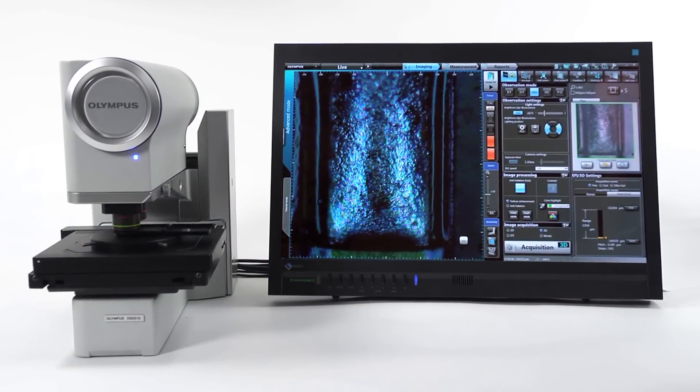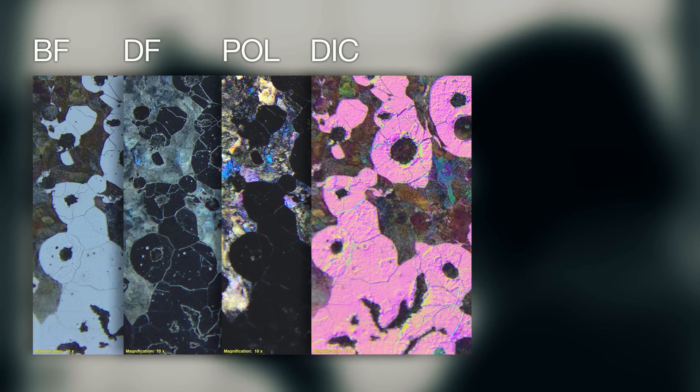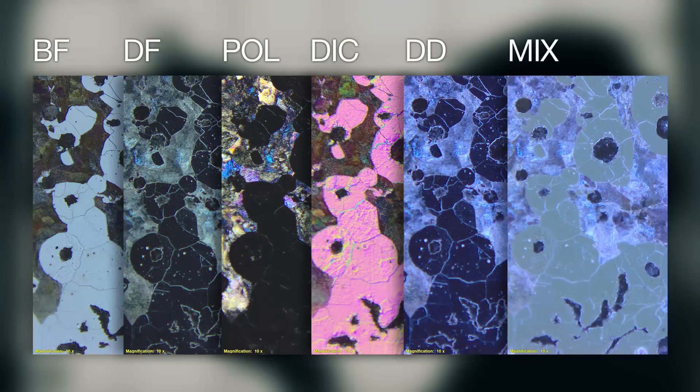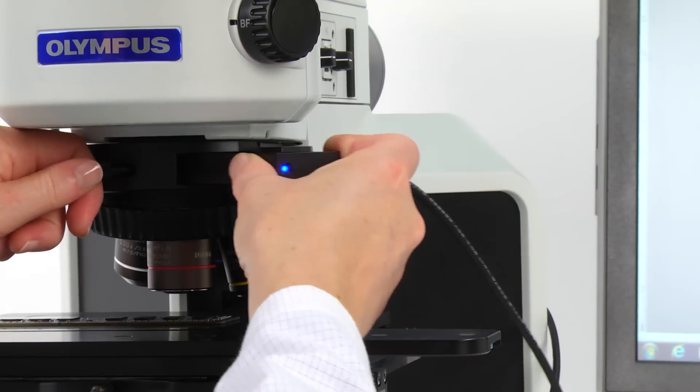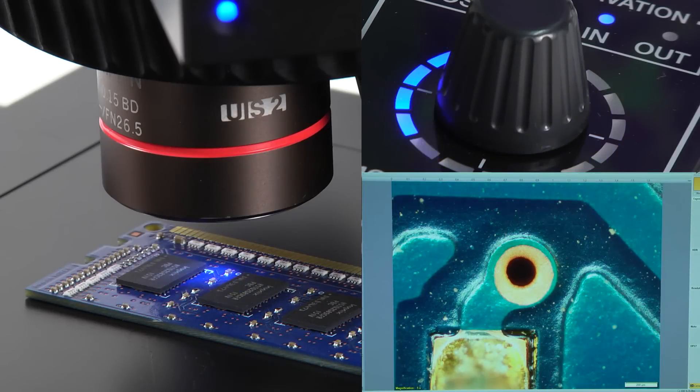Based on technology from our DSX digital microscopes, the BX3M also offers Olympus directional dark field and mix illumination. The 16 LEDs in the mix slider shine directional dark field on the sample, similar to traditional dark field but with more flexibility.